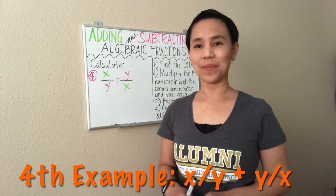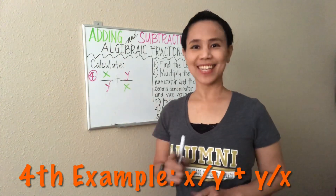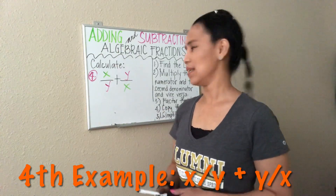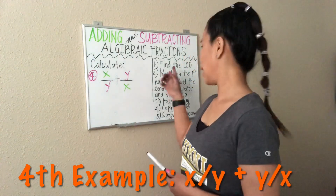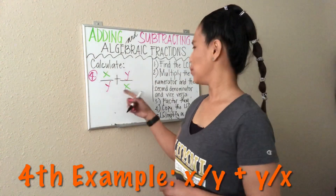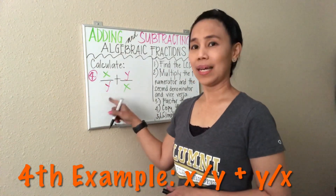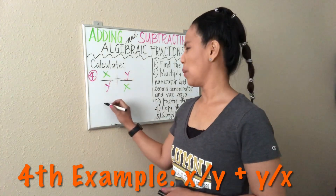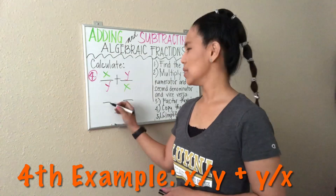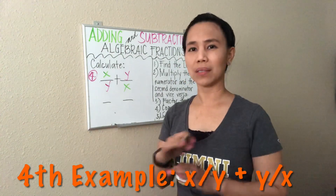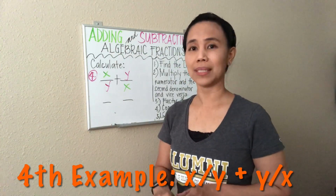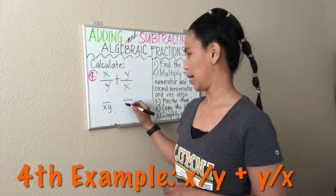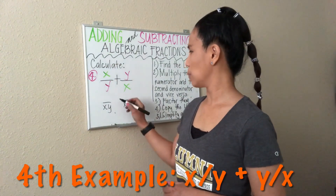Let's have this last example — and this is the easiest one. What if we have X over Y plus Y over X? Again, let's apply the steps we've learned. We have to find the LCD by multiplying the denominators. Y times X would be XY. In algebra, we arrange variables alphabetically, so we write XY. So XY is the common denominator on both sides and we are adding.